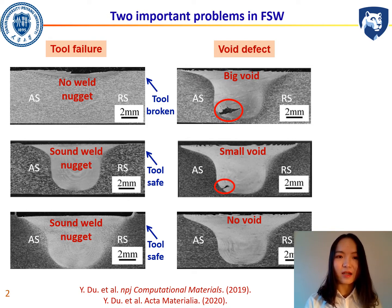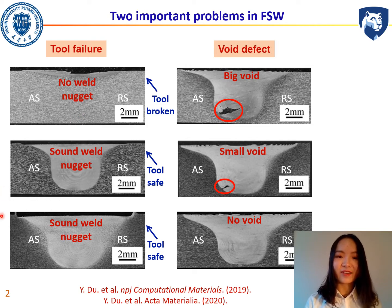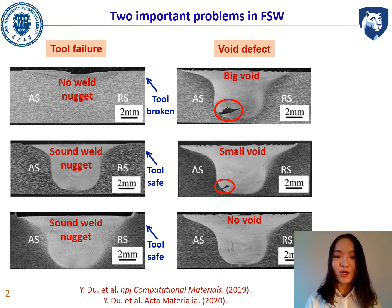As we can see here, if the tool is broken, then there is no weld nugget. Otherwise, we can see some kind of nugget, whether it's good or not. For void defects, we can see it depends on the process parameters — it can be a big void, a small void, or even no void. So it is highly dependent on the process.